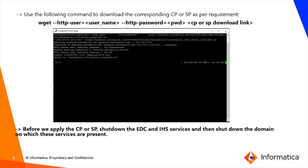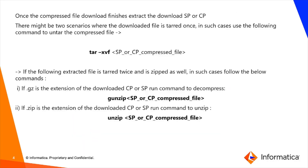Before moving ahead to the next steps, we need to shut down the EDC or IH services, and then shut down the entire domain on which those services are running. If we keep the domain up and try to install CP or SP, the installation cannot proceed. So make sure that you shut down the domain before continuing.